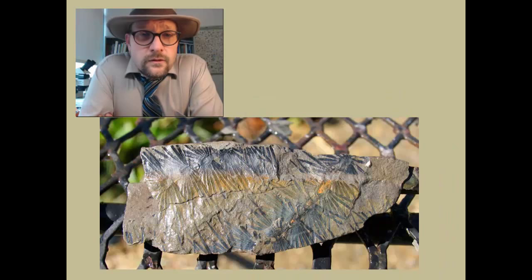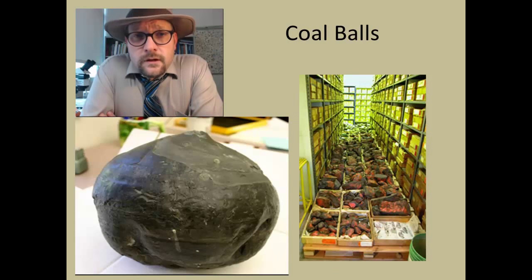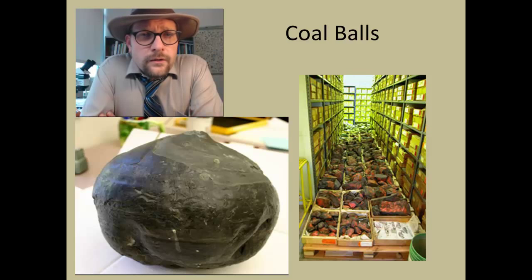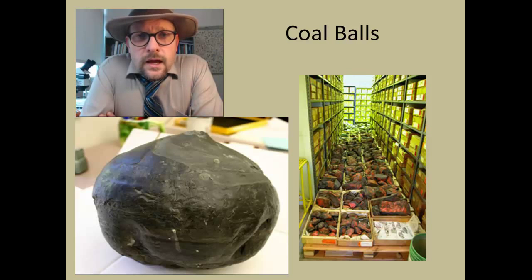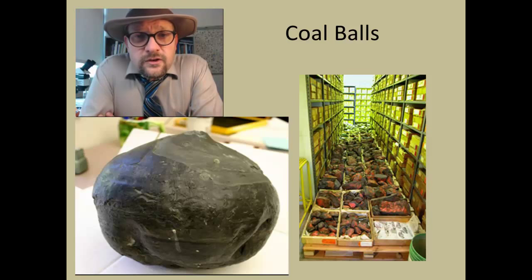We have a record of fossil leaves going back into some of the earliest land plants — this is an example of a Carboniferous fossil from Pennsylvania. We can trace the evolution of plants through many of these fossils. Fossil plants don't necessarily need to be impressions of leaves or petrified wood; they can be other things as well, such as what are called coal balls. These occur in Appalachia, where you get limestones embedded within a coal bed, and these can actually preserve many different components of the plants that were living in the forest at the time.